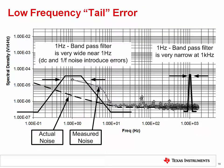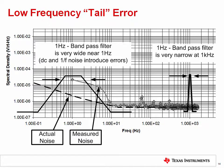The low frequency tail occurs because the spectral density curve is shown on a logarithmic axis, so the measurement bandwidth as a percentage of frequency is much wider at low frequencies than at high frequencies. As a result, at low frequency the bandpass filter captures some unwanted DC content as well as 1/f noise beyond the frequency being measured, pushing the spectrum higher than it should be. A good practice is to measure one decade lower than you need and simply discard the low-frequency points.